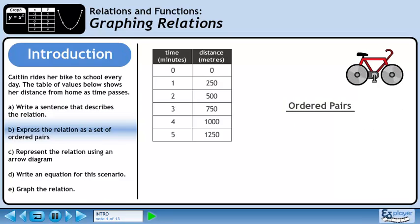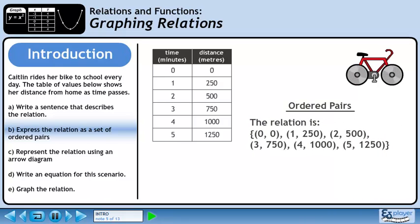In Part B, we will express the relation as a set of ordered pairs. Each row in the table of values can be represented as an ordered pair.